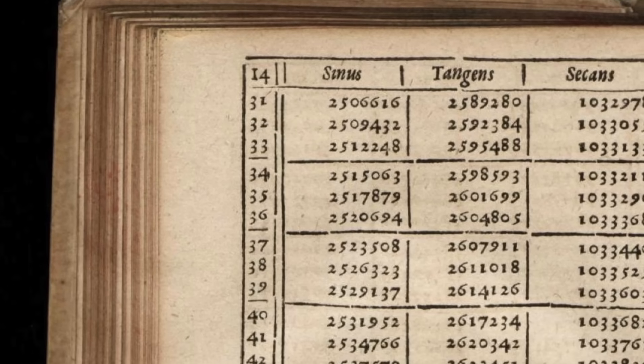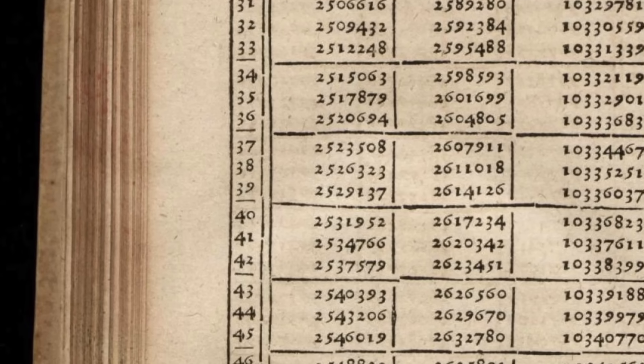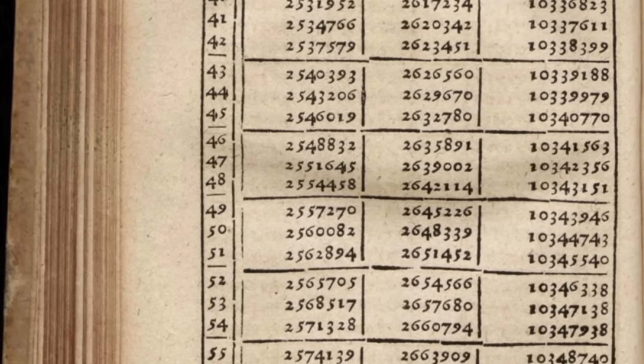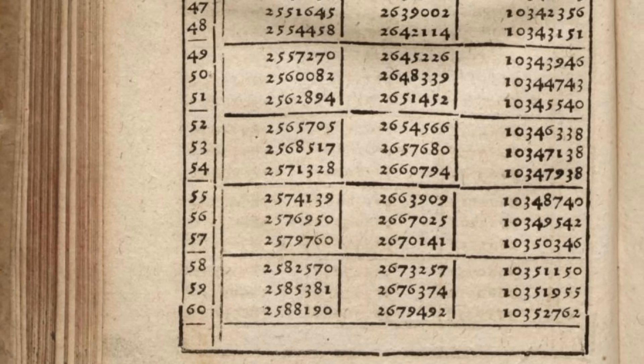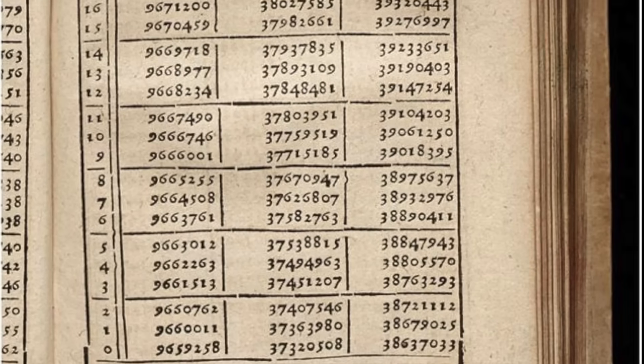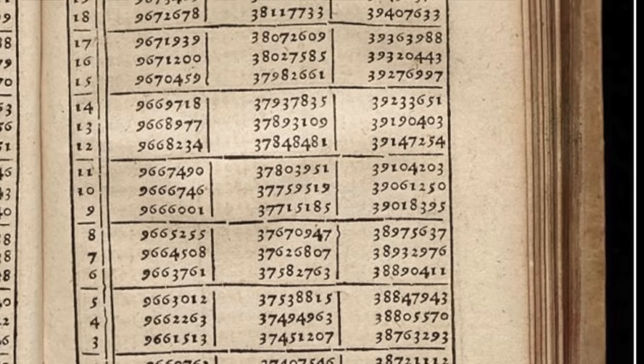The reason that all six of these functions have separate names, by the way, is that before computers and calculators, if you were doing trigonometry, maybe because you were a sailor, or an astronomer, or some kind of engineer, you'd find the values for these functions using large charts that just recorded known input-output pairs.